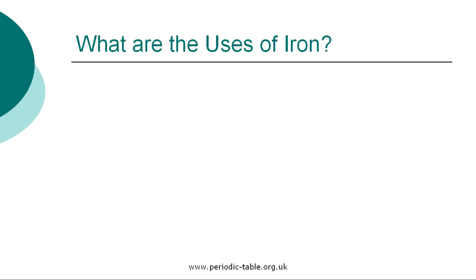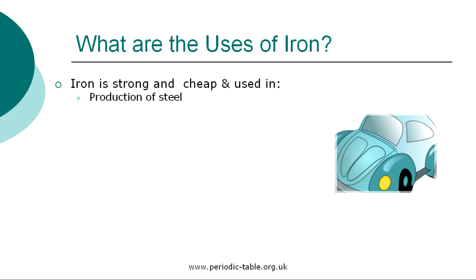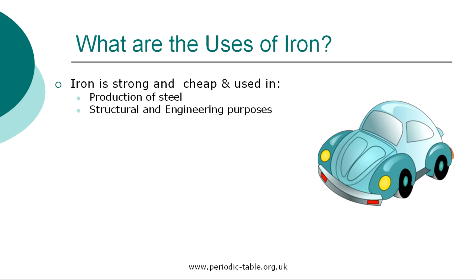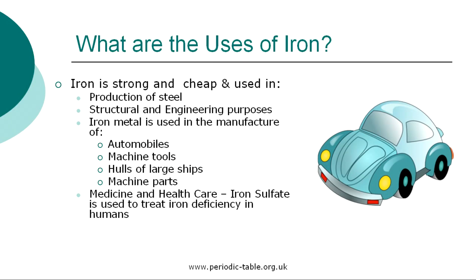Once the properties of an element have been established, we then have the ability to identify how it can be used. Iron is used in the production of steel, the best known alloy of iron. Iron metal is strong and quite cheap, so it is used for structural and engineering purposes, including the manufacture of automobiles, machine tools, hulls of large ships, and machine parts. It is also used in medicine as iron sulfate, which is used to treat iron deficiency in humans.